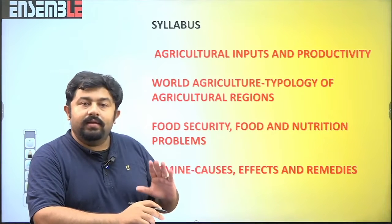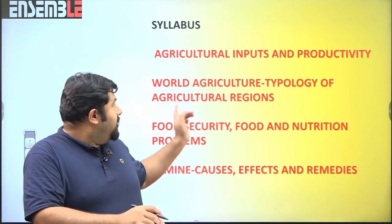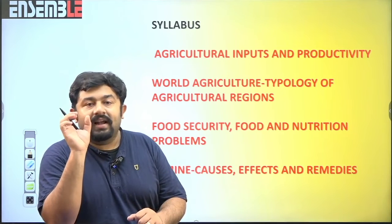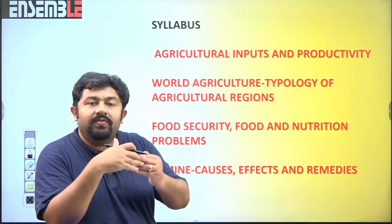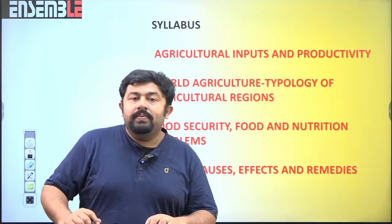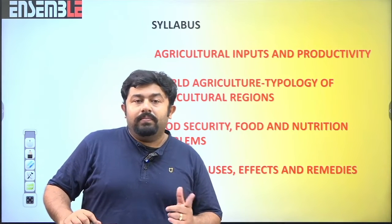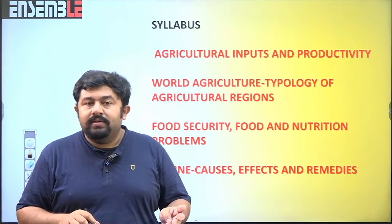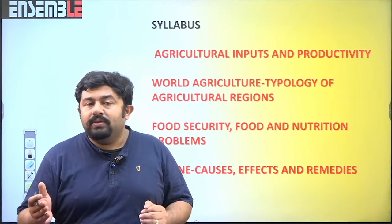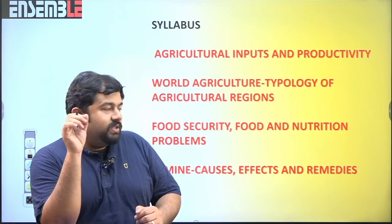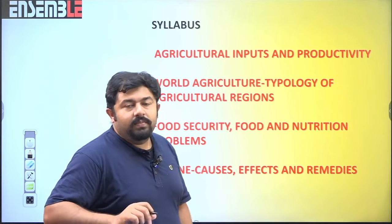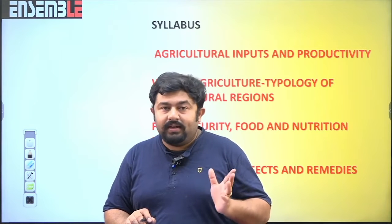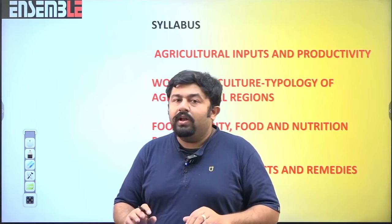Agriculture inputs and productivity will be covered in great detail under Indian agriculture. The next topic is world agriculture: typology of agricultural regions. Typology means classification — so this is about classifying different agricultural regions based on inputs and outputs. Inputs include farm labor, intensity of human and economic cost, and use of animals. The most famous theory is by Wittlesey, who classified the world into 12 different agricultural regions with their characteristics.